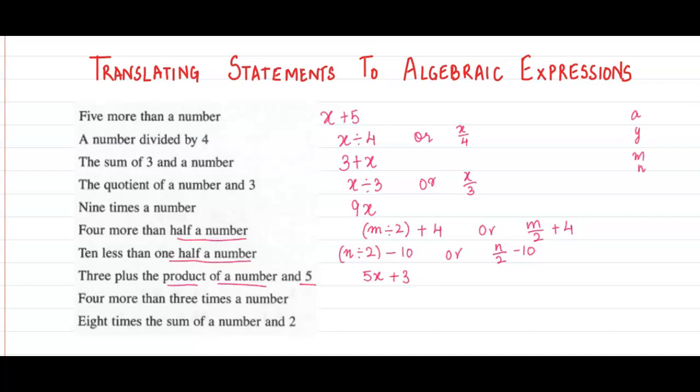Next, 4 more than 3 times a number. 3 times a number means 3x, and 4 more means plus 4.